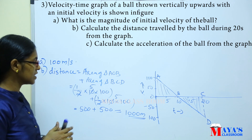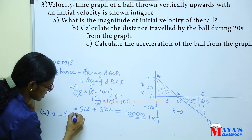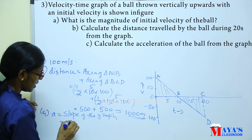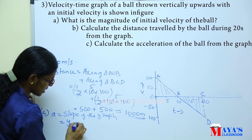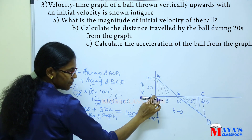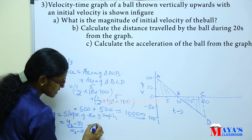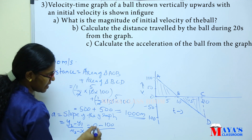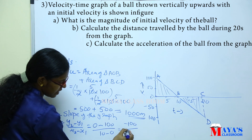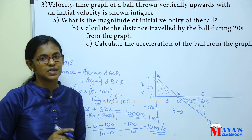Now for the acceleration of the ball. Acceleration equals the slope of the velocity-time graph. Slope equals y2 minus y1 divided by x2 minus x1. From the graph, y2 is 0 and y1 is 100. x2 is 10 and x1 is 0. So slope equals 0 minus 100 divided by 10 minus 0, which equals minus 100 divided by 10, equal to minus 10 meters per second squared. Acceleration is minus 10 m/s².